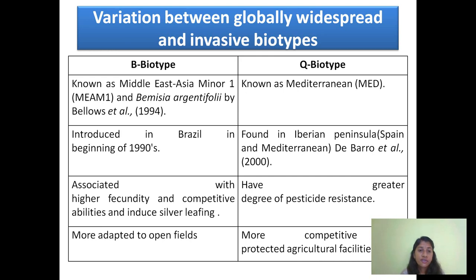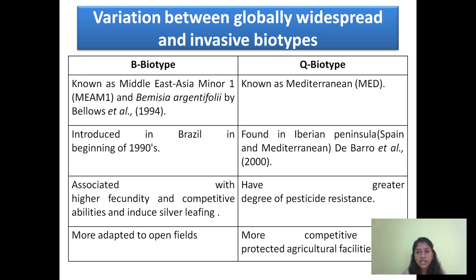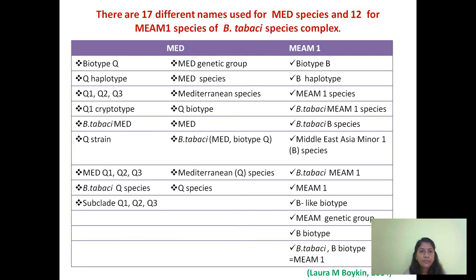Among all the biotypes, biotype B and biotype Q have gained a globally widespread range and are the invasive biotypes. The B biotype is known as Middle East Asia Minor 1, and the Q biotype is known as the Mediterranean, based upon their origin. The B biotype was introduced in Brazil in the beginning of the 1990s, and the Q biotype was found in the Iberian Peninsula. Higher fecundity was associated with B biotype, and higher pesticide resistance with Q biotype. B biotype is more common in open fields, while Q biotype is found in protected agricultural facilities like greenhouses. There are 17 names used for biotype Q and 12 different names for biotype B.